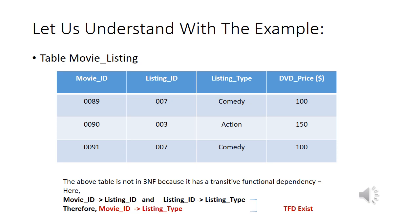Movie ID determines Listing ID, and Listing ID determines Listing Type — therefore Movie ID determines Listing Type. This is the transitive functional dependency: if Movie ID determines Listing ID and Listing ID determines Listing Type, then there exists a transitive functional dependency in the table. That is why we say this table is not in 3NF.